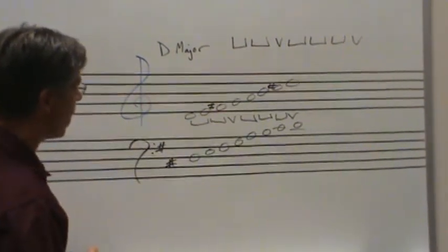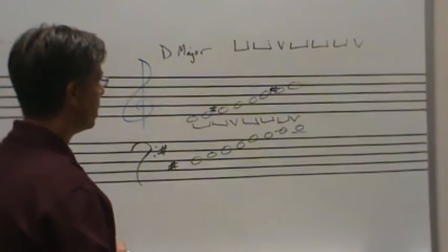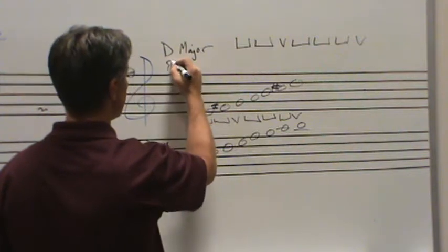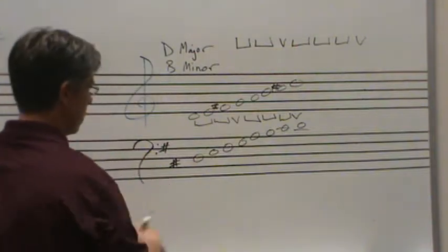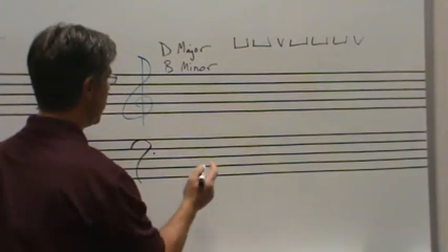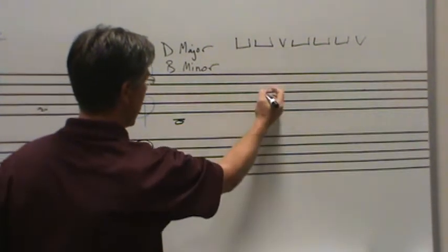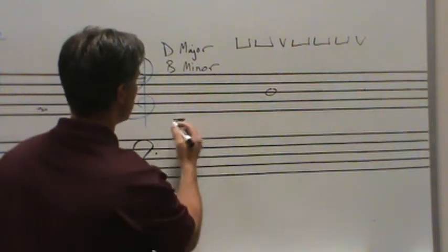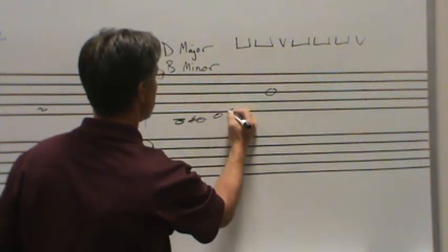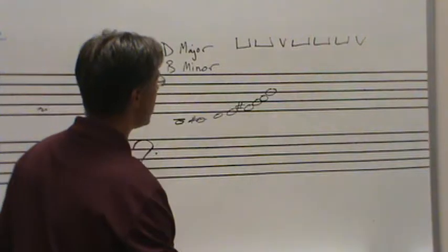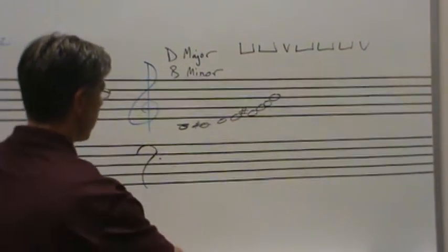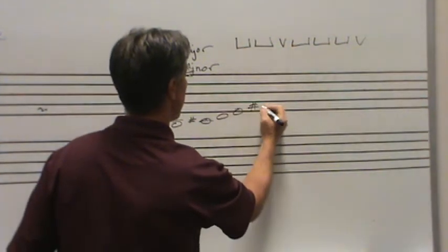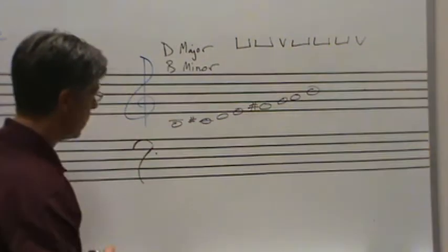The third step is to identify the relative minor of D major, which you've learned that it's the sixth step of the scale. One, two, three, four, five, six. So the relative minor of D major is B minor. So if we were to write a B minor scale, it starts and ends on B. It has the same sharps and flats as D major, two of them, C sharp and F sharp. So B, C sharp, D, E, F sharp, G, A, B. That gives us our natural minor scale for B.